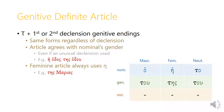The feminine definite article always uses the eta connecting vowel, even if the noun it introduces uses an alpha connecting vowel. So even though marias uses alpha, the definite article uses eta: tase marias. The forms of the genitive definite article are tu, tase, and tu. In the masculine and neuter genitive we see the same ending u, with the feminine having the sigma ending tase.